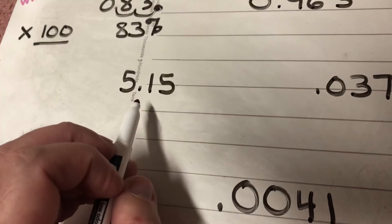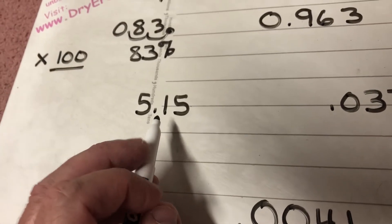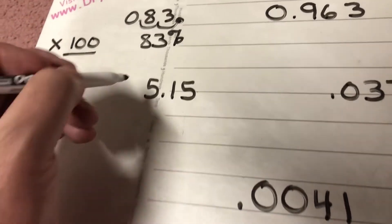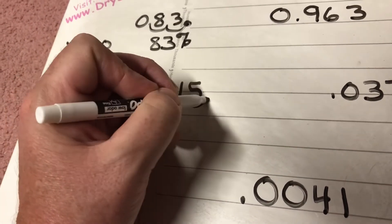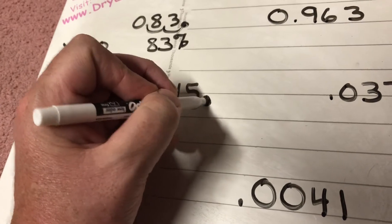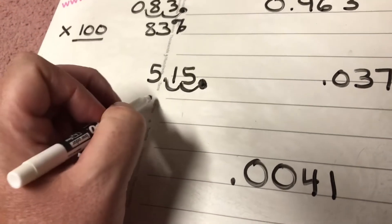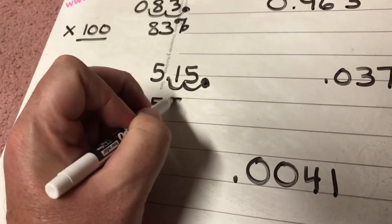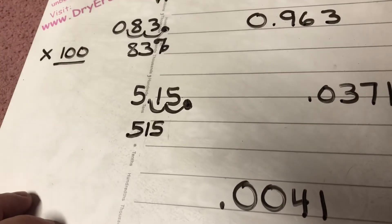When I have 5 and 15 hundredths, I'm going to multiply by a hundred, which means I'm going to move the decimal twice to the right. I end up with 515, so that's 515 percent.